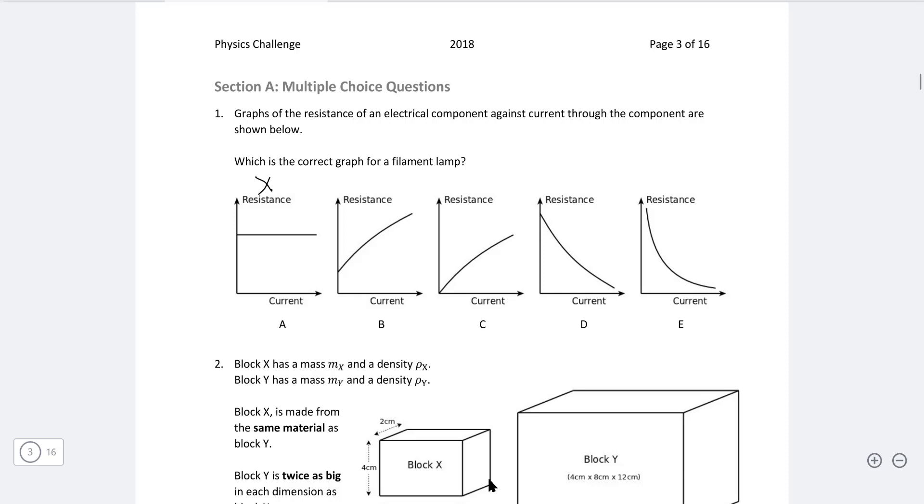So B is actually the correct answer. And this is because the resistance increases with temperature and increases hence with the current. But if the current is zero, the lamp will still have some amount of resistance across here. That's why the answer is B and not C.